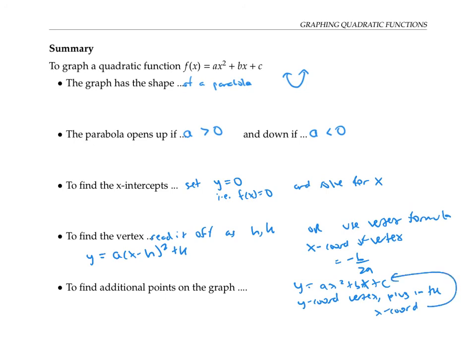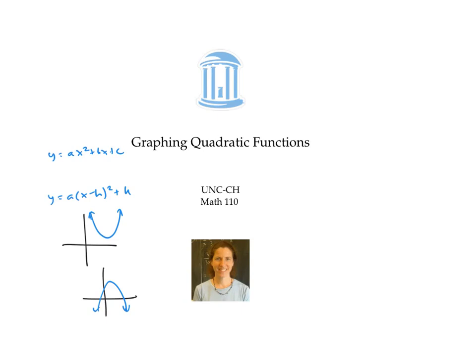In this video, we learned some tricks for graphing quadratic functions. In particular, the vertex can be read off as (h, k) if the function is written in vertex form, and the x-coordinate of the vertex can be calculated as −b/(2a) if the function is in standard form. For an explanation of why this vertex formula works, please see my other video.